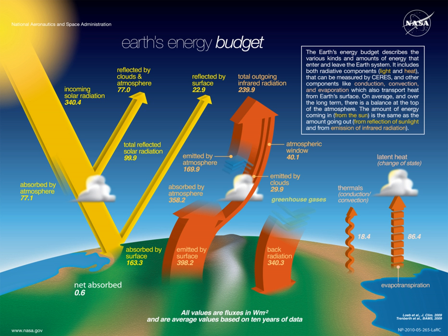When greenhouse gas molecules absorb thermal infrared energy, their temperature rises. Those gases then radiate an increased amount of thermal infrared energy in all directions. Heat radiated upward continues to encounter greenhouse gas molecules, which also absorb the heat, and their temperature rises and the amount of heat they radiate increases. The atmosphere thins with altitude, and at roughly 5 to 6 kilometers, the concentration of greenhouse gases is so thin that heat can escape to space. Because greenhouse gas molecules radiate infrared energy in all directions, some of it spreads downward and ultimately returns to the Earth's surface, where it is absorbed. The Earth's surface temperature is thus higher than it would be if it were heated only by direct solar heating.